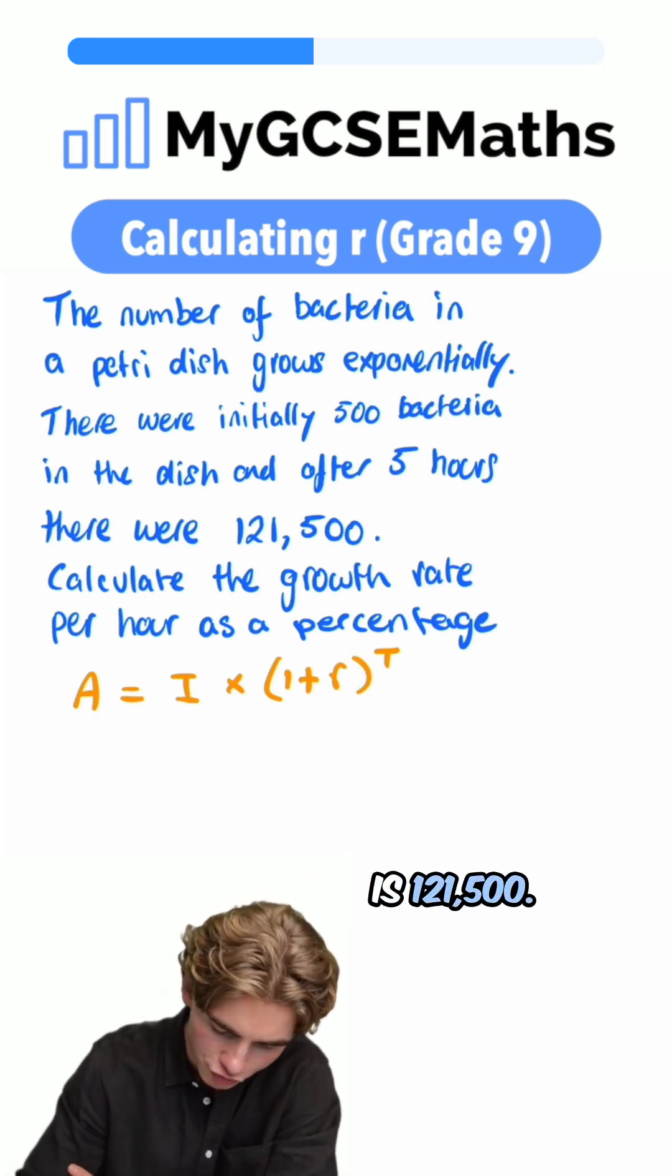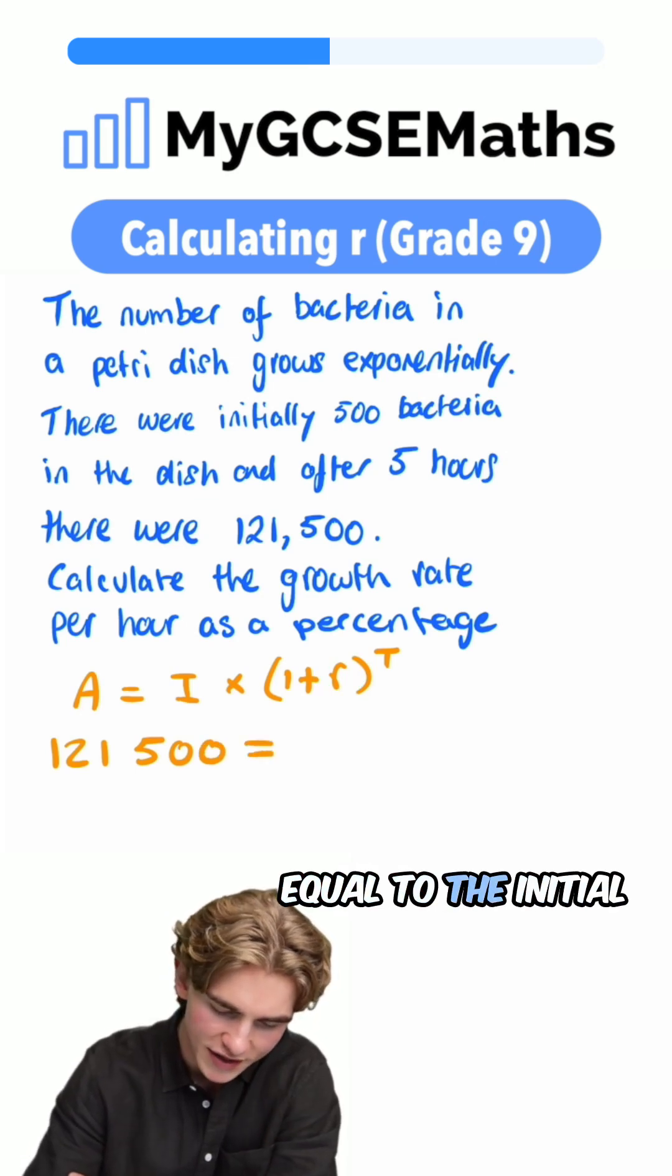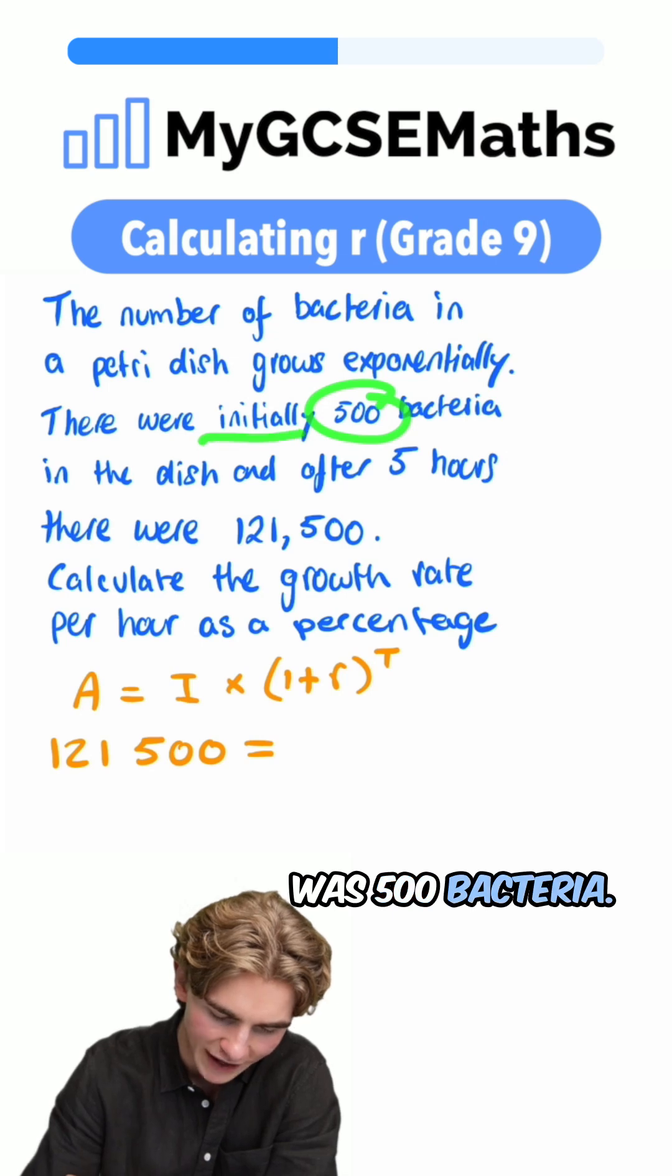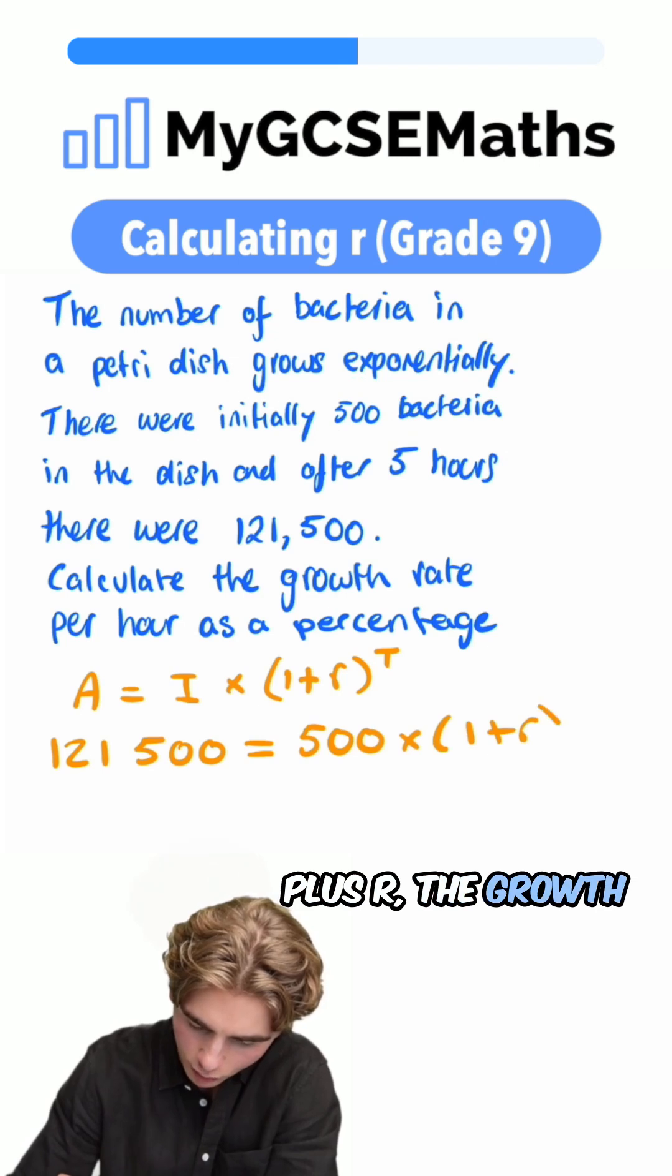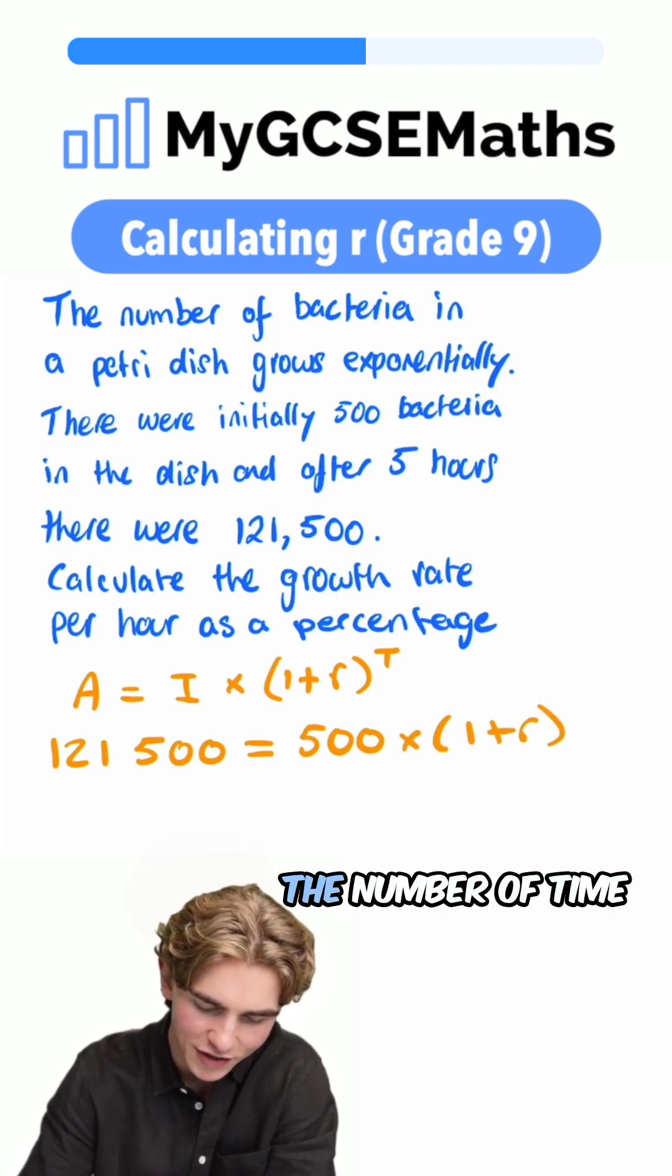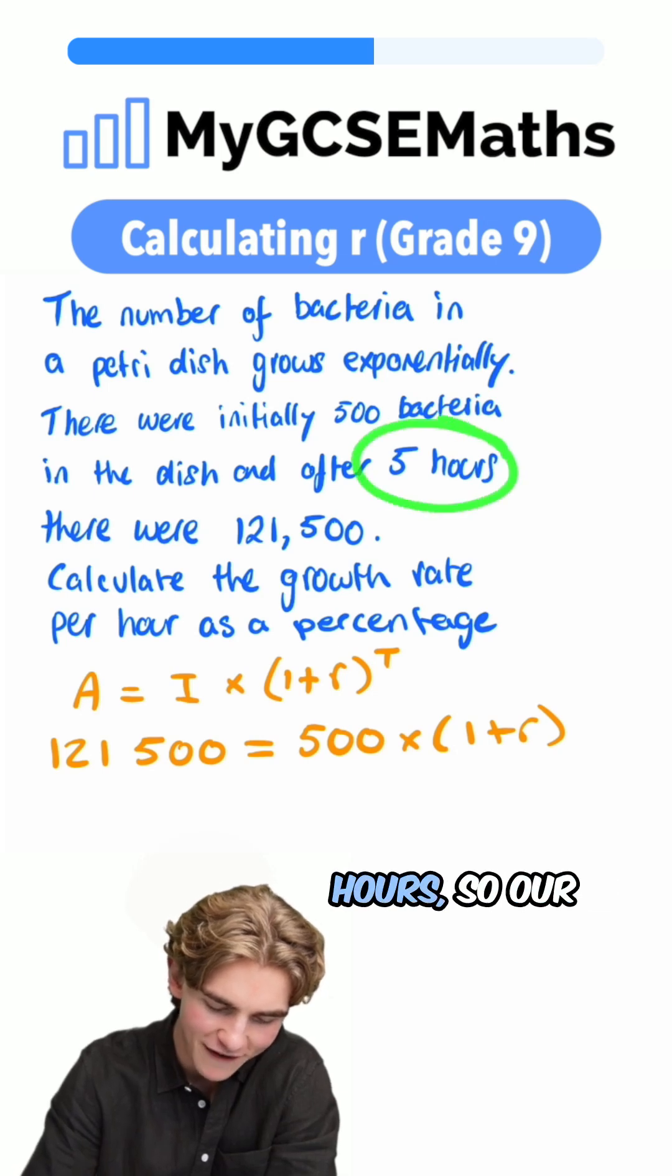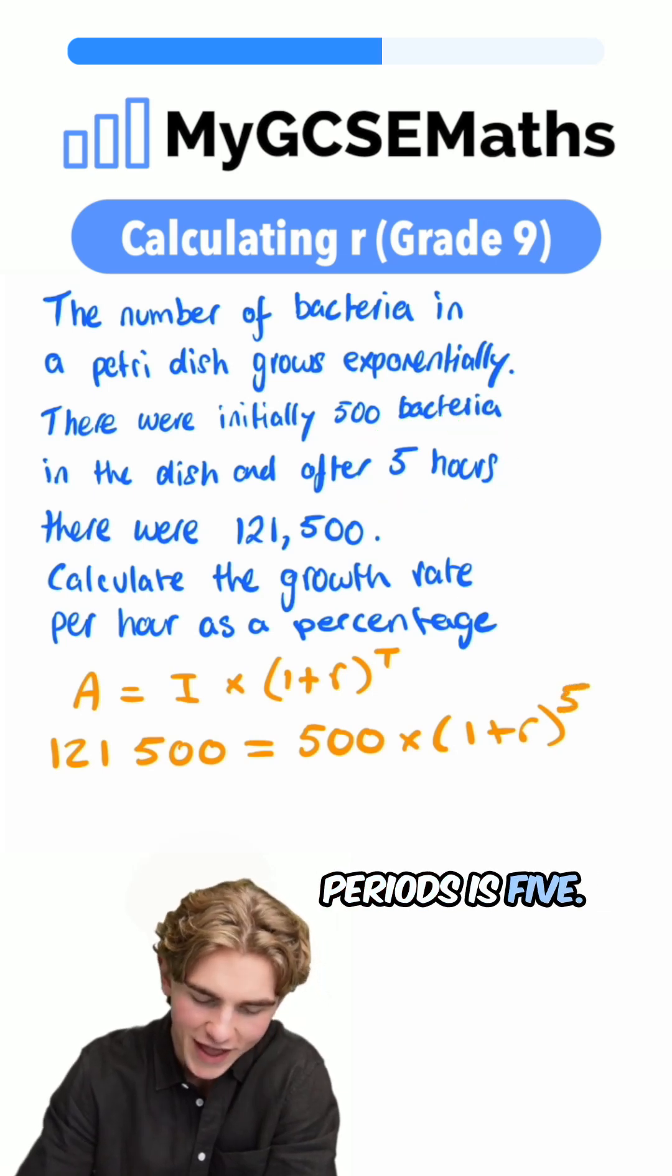So what can we say? The end amount is 121,500. That's going to be equal to the initial amount, which was 500 bacteria, so we have 500 multiplied by one plus the growth rate as a decimal to the power of t, the number of time periods. Here we have five hours, so our number of time periods is five.